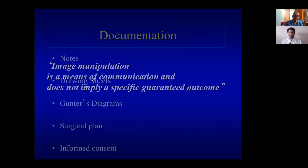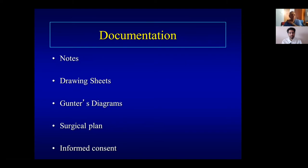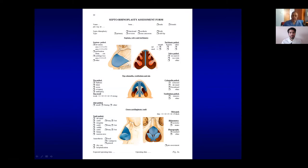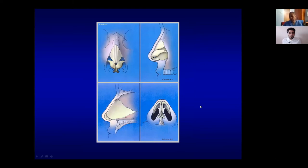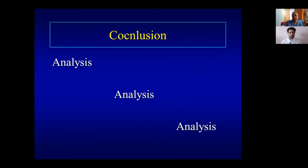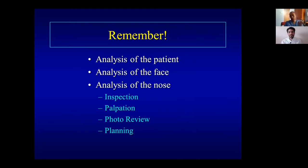Finally, it's essential to document everything when planning a rhinoplasty. Write your notes — there are drawing sheets where you can tick abnormalities and plan your surgery. Gilbert Knowles Trinity sheets are available online. Gunter Diagrams software, which you buy, lets you tick findings and shows what you've planned. Write your surgical plan and explain all aspects of the operation, including possible complications. To conclude: analysis, analysis, analysis — patient, face, nose — then inspect the nose, palpate the nose, review photographs, and write your planning diagrams.